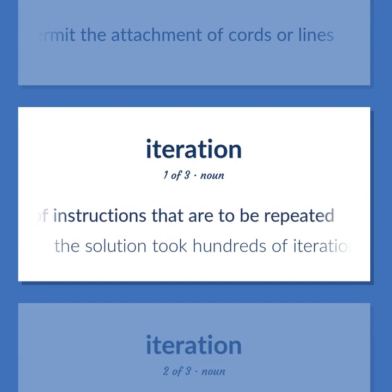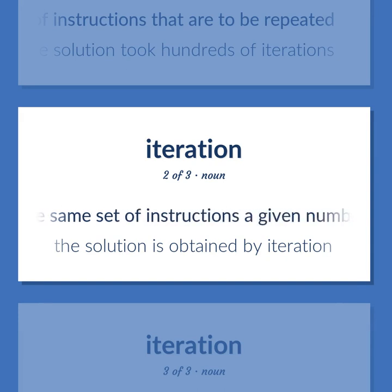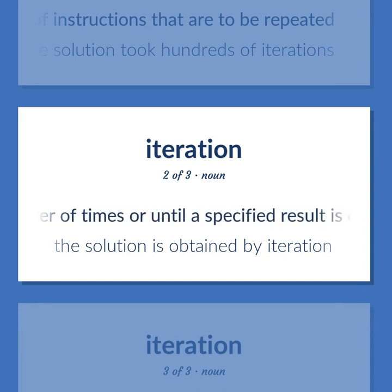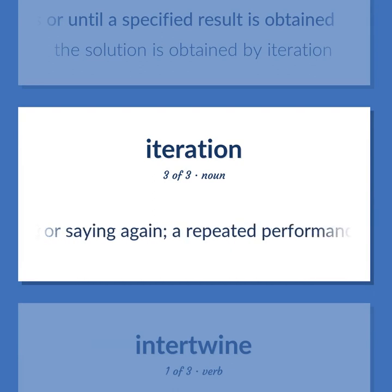ITERATION: The solution took hundreds of iterations. Computer science — executing the same set of instructions a given number of times or until a specified result is obtained; the solution is obtained by iteration. Doing or saying again; a repeated performance.